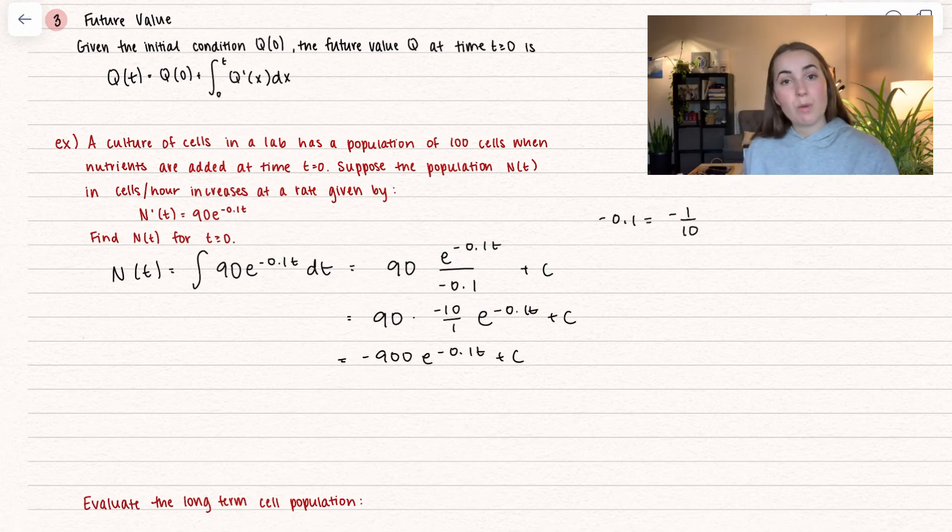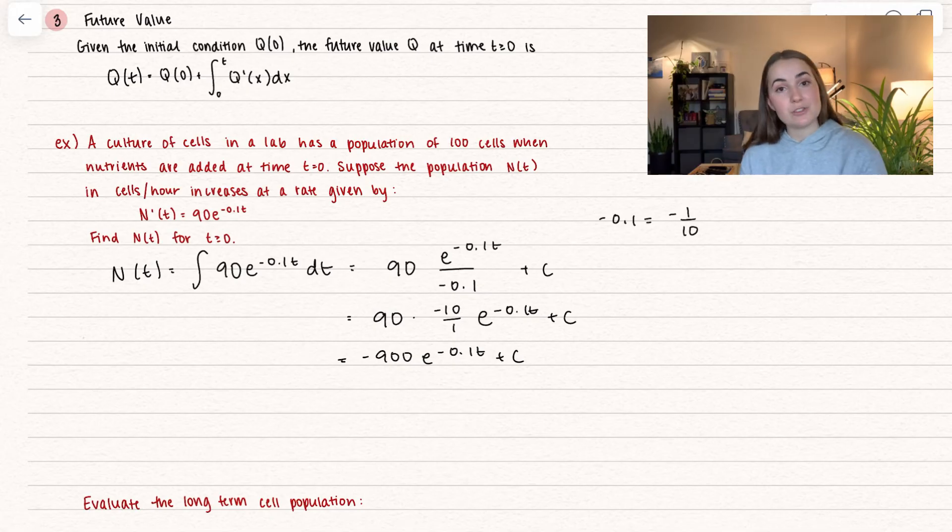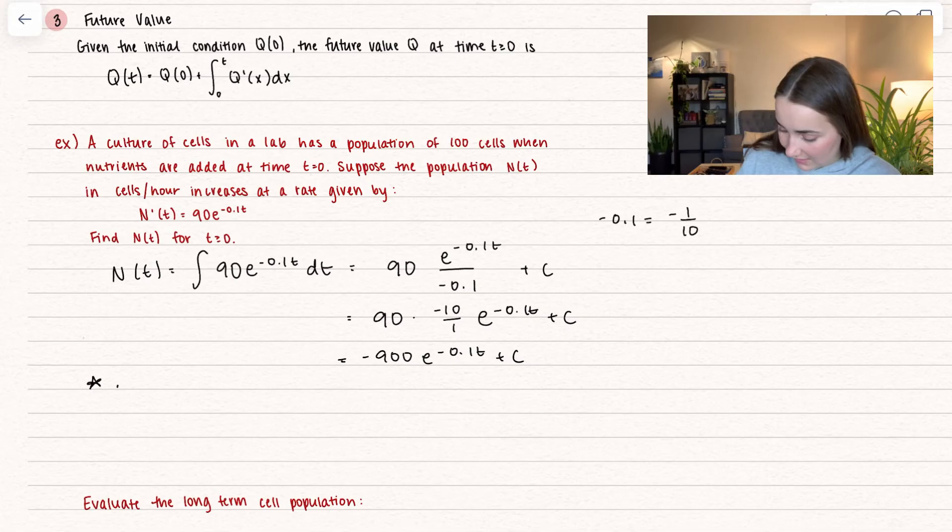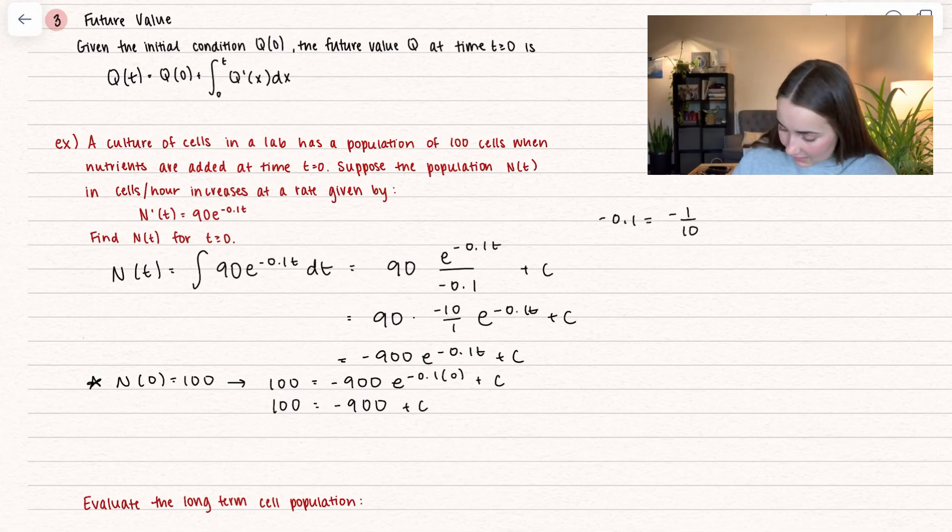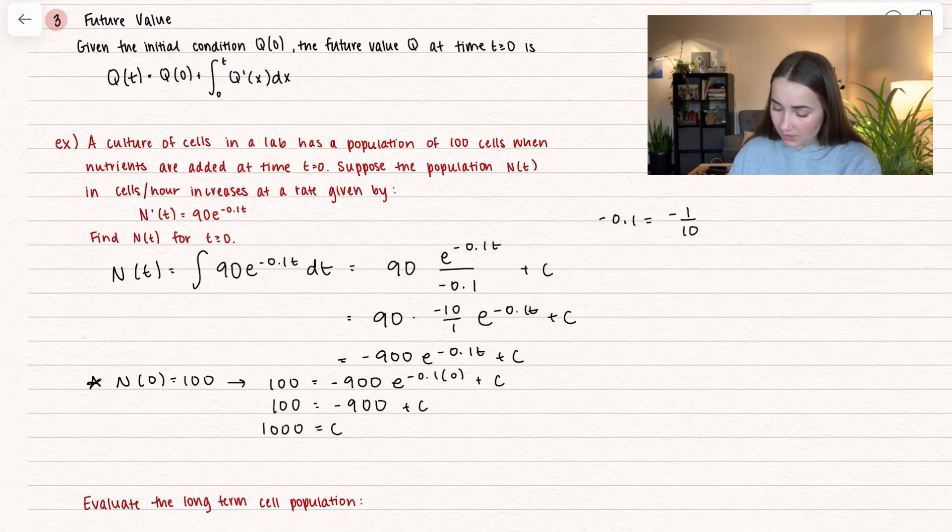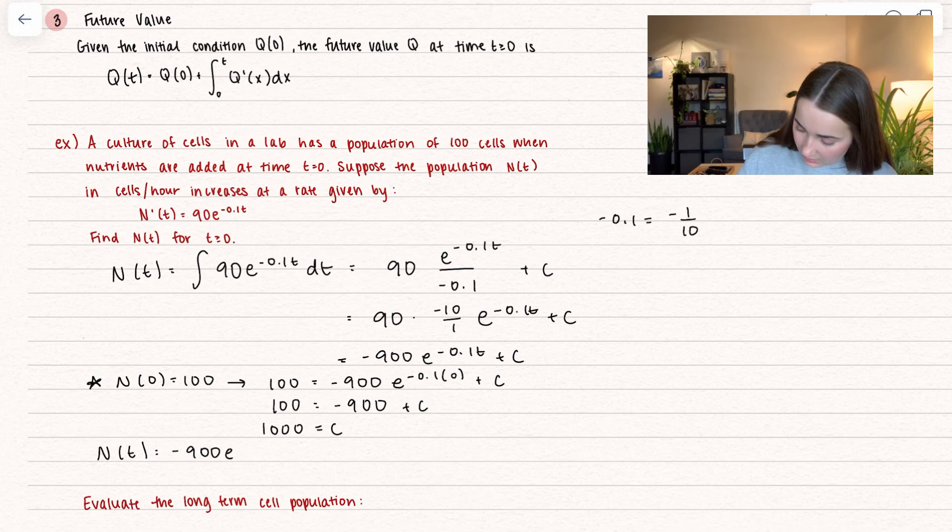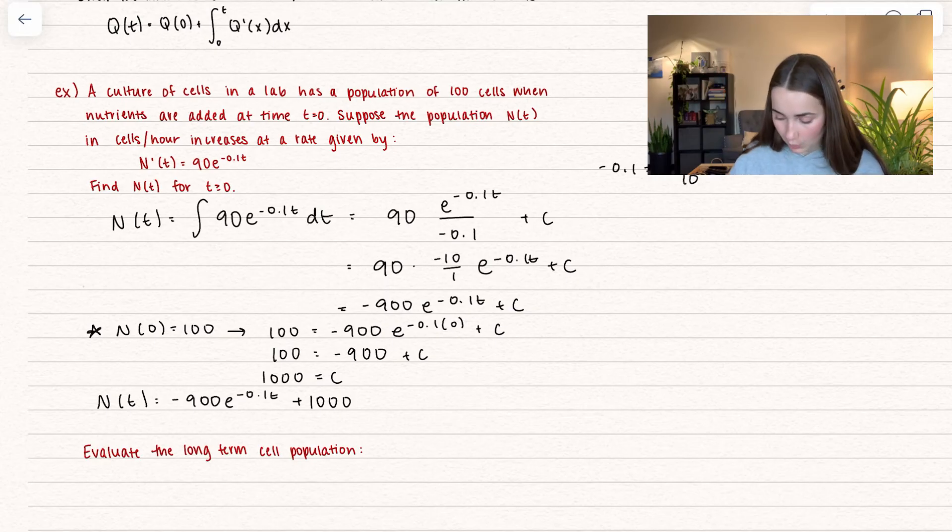Now we need to find the c value using the initial condition. Our initial condition is that N(0) equals 100, because we start off with 100 cells. So 100 equals negative 900 times 1 (since e to the power of 0 is just 1). Now I can add 900 to each side, and I get 1,000 equals c. So our official equation is N(t) equals negative 900e to the negative 0.1t plus 1,000.